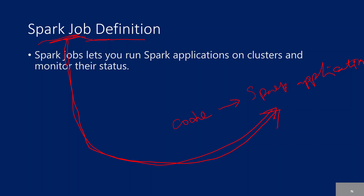Now, what is Spark job definition? Whenever a Spark job actually runs, it's like a scheduled processor or something that will take this application to run. We will be defining some compute inside that Spark job — like maybe take four cores and then execute my Spark application on top of the Spark cluster. Defining that process or defining this Spark job is nothing but a Spark job definition.